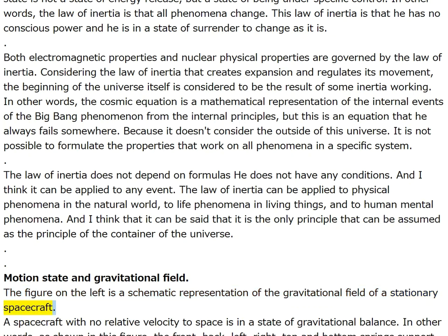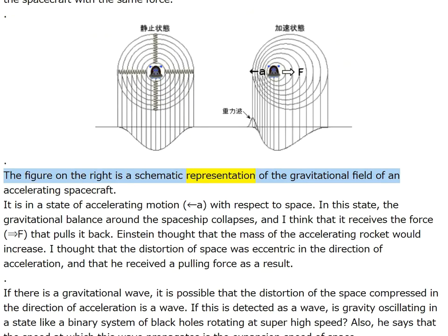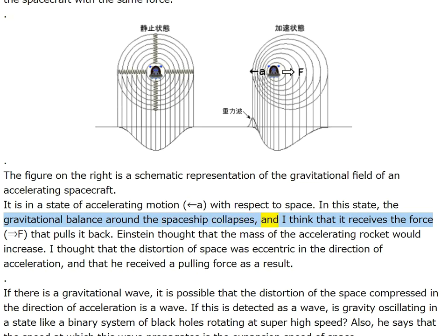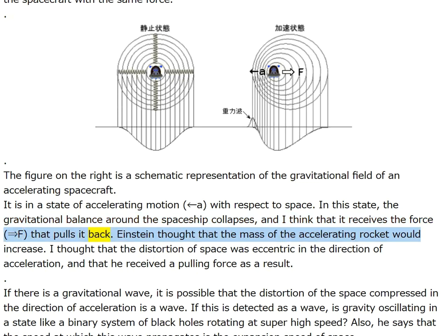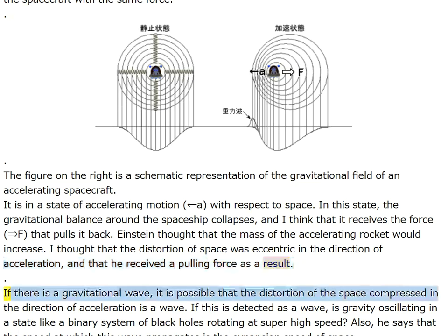The figure on the right represents the gravitational field of an accelerating spacecraft accelerating at rate a with respect to space. The gravitational balance collapses and it receives a force f that pulls it back. Einstein thought that the mass of the accelerating rocket would increase; I thought that the distortion of space becomes eccentric in the direction of acceleration and receives a pulling force. If there is a gravitational wave, it is possible that the distortion of space compressed in the direction of acceleration is a wave — detected as a wave in a binary black hole system rotating at super high speed.